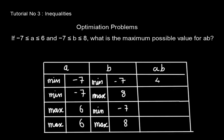-7 times -7 is 49. -7 times 8 is -56. 6 times -7 is -42. And 6 times 8 is 48. So now you see what is the greatest value? 49.